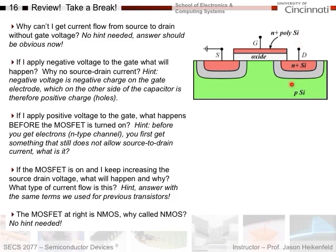Quick review: Why can't I get current flow from drain to source as-is? That should be easy. If I apply negative voltage to the gate, I get no current across the channel. If I apply positive voltage, what happens first before the MOSFET turns on? If positive voltage is applied and I keep increasing drain voltage, what happens? You should be able to answer that using the same terms we used for previous transistors. This device is called NMOS — it's on a P-type substrate, but you should know why we call it NMOS at this point.